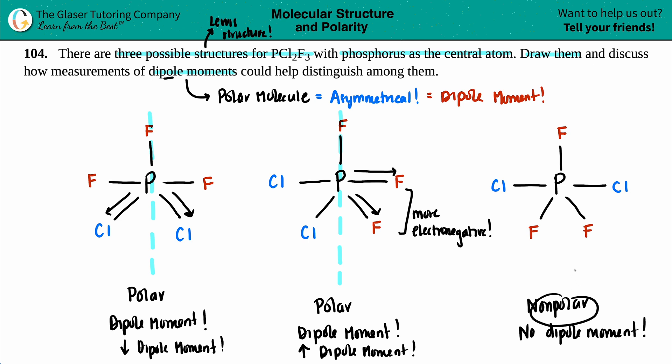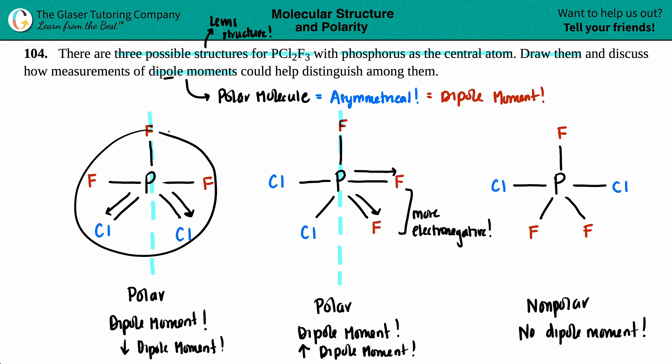To summarize: non-polar means symmetrical with no dipole moment, so the third structure has a dipole moment of zero. The other two are both polar, but the one where fluorines dominate the pull has a higher dipole moment than the one where chlorines are involved. That's it — I really hope this helped. Let me know in the comments, thank you for coming to the channel, and I'll talk to you soon.